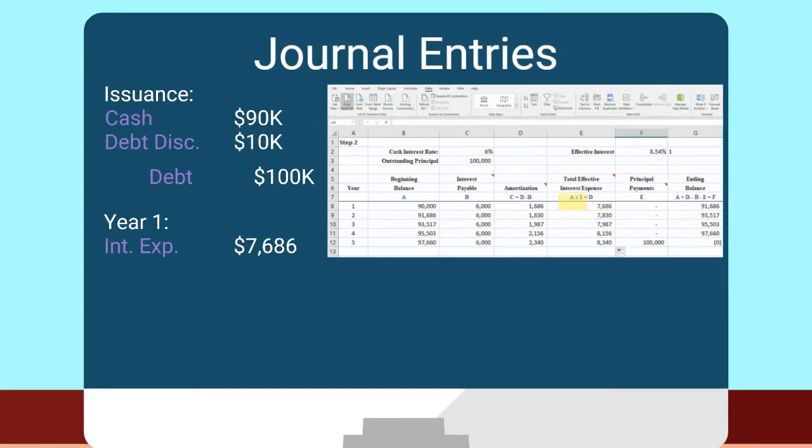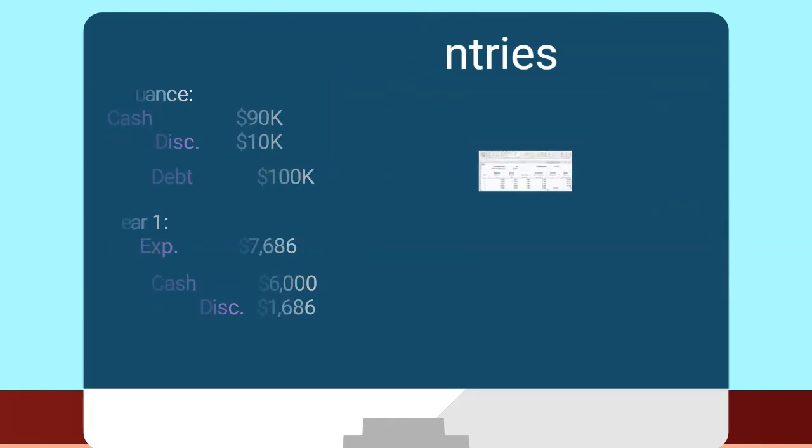Your credit would be $6,000 to cash for the interest paid and a credit to discount for the $1,686 of amortization. Oh, I see how those entries work. Thanks. Okay, one last question.